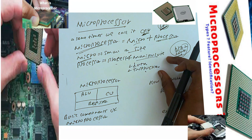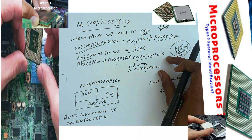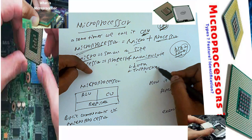The microprocessor processes and manipulates any instruction and data based on the users and programmers. When the computer controls the process, the output, the display, and the data manipulation, we call it microprocessor. So it processes and manipulates the data and instruction.